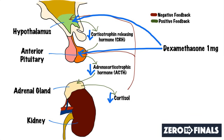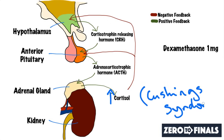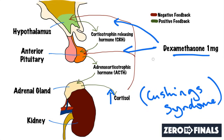What happens if you have a high level of cortisol to begin with, meaning you have Cushing's syndrome? Well, the cortisol is already so high that this one milligram of dexamethasone is not enough to cause any suppression. If your body is used to having loads of cortisol, adding another one milligram won't make much difference. So a positive result from the low dose test is that cortisol remains high or within the normal range, which is suggestive of Cushing's syndrome.